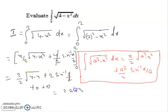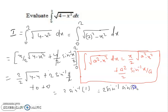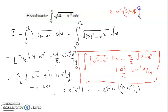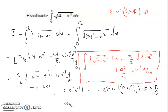So we are left with 2·sin⁻¹(1). Since sin(π/2) = 1, we have sin⁻¹(1) = π/2. Therefore, 2 × (π/2) = π. The answer is π. Thank you.